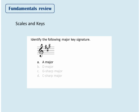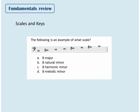Other questions ask you about scales. Remember, there are three forms of the minor scale: natural, harmonic, and melodic. You should be able to recognize all three forms written with key signatures, accidentals, or used in melodies. Here's an example — the following is an example of what scale? It's B harmonic minor, harmonic minor because of the raised seven; the A-sharp is the leading tone.